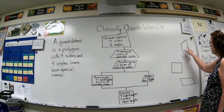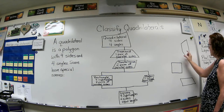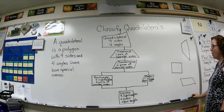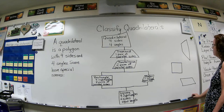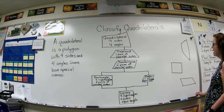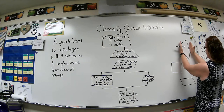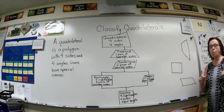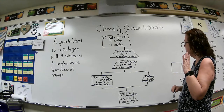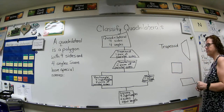Here we have a quadrilateral — it has four sides and four angles. Here's an acute angle, here's an obtuse angle, here's another obtuse angle, and here's another acute angle. Its sides are not equal length and it does not have right angles. But it does have one pair of parallel sides — these two opposite sides are parallel, but these are not. So it has one pair of parallel sides. That is a trapezoid.